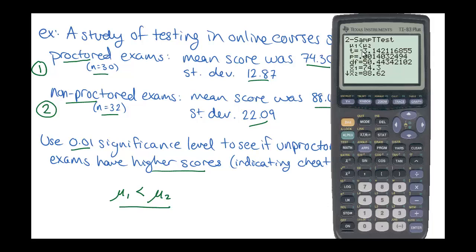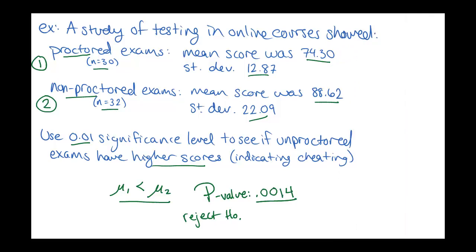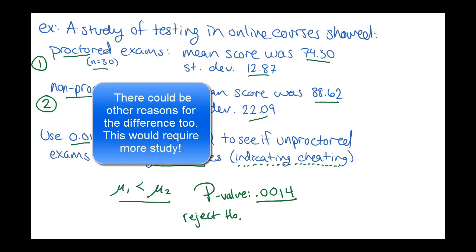Here this t is our test statistic, and then here's our p-value. This p-value is quite small. For our 0.01 significance level, this is still quite a bit smaller than it. So we would reject H0, which means that our claim does seem to be true. There is evidence to indicate that according to this data, students that had non-proctored exams did better, which would indicate that there's probably some cheating on the non-proctored exams if all the other things are equal.